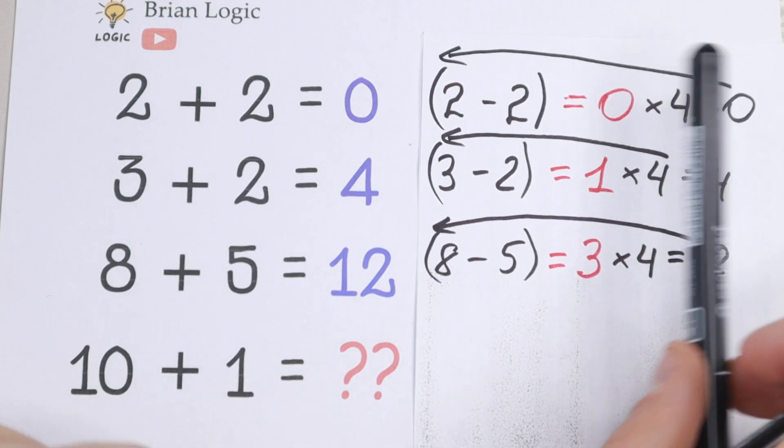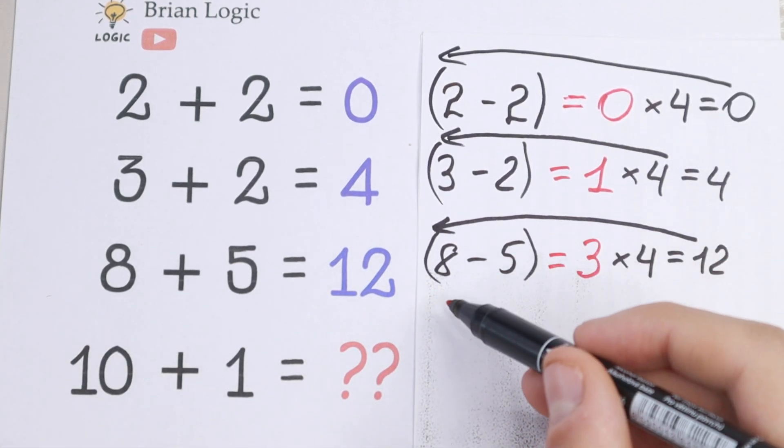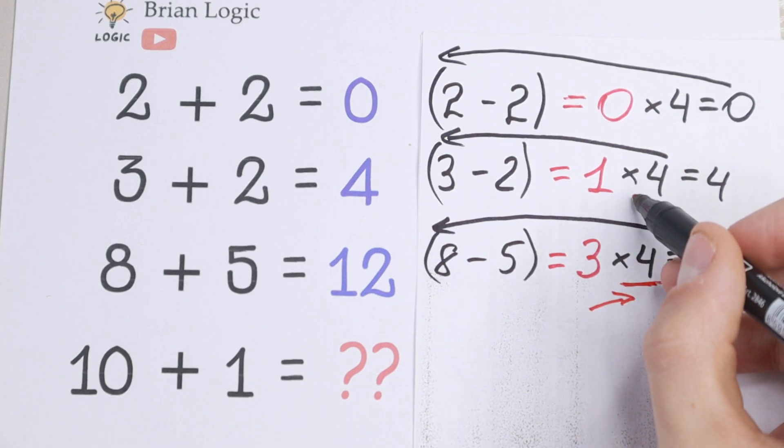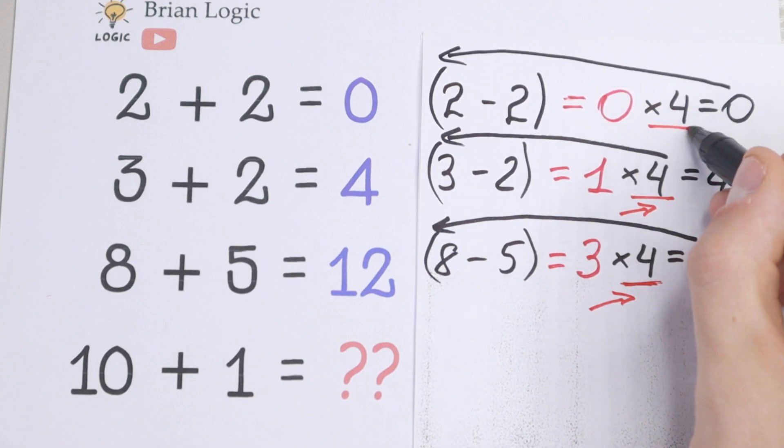the same number as right here. So the pattern between all of these rows, as you can see, we just subtract these two digits, and multiply it by 4. Right here we multiply it by 4. And in every case we multiply it by 4.